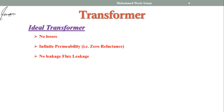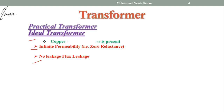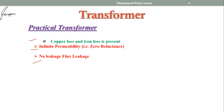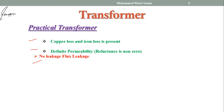Before drawing the equivalent circuit diagram, let us understand the difference between ideal transformer and practical transformer. In an ideal transformer there are no losses, the permeability of the core is infinite, and there is no leakage flux. In a practical transformer, we have losses — copper loss and iron loss are present. The permeability is definite, so the reluctance is non-zero, and leakage flux is also present.